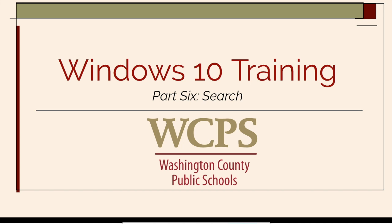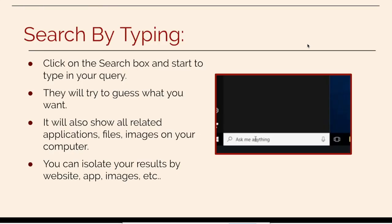In this video, you will learn about different search options in Windows 10. One way you can search is by typing in the search box in the bottom left. You'll type in your query, and then they'll try to guess what you want. Also, they'll only show related applications, files, or images on your computer that goes with the search.